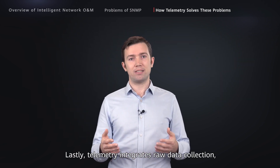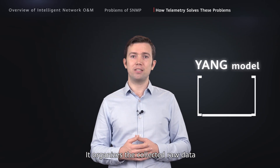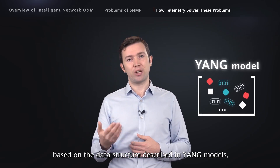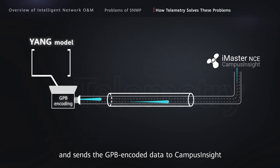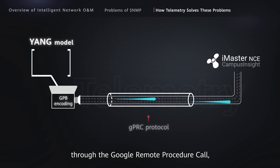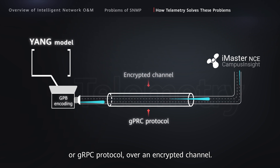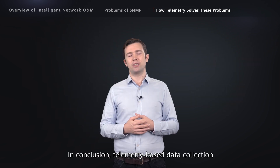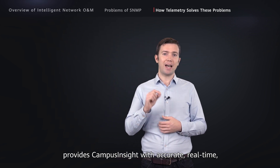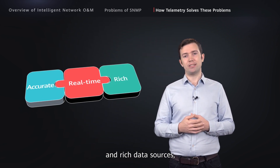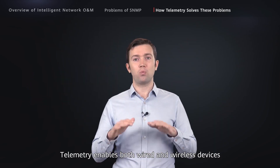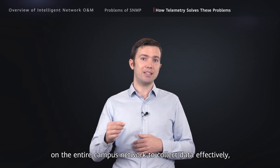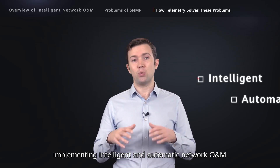Lastly, telemetry integrates raw data collection, data modeling, encoding format, and transport protocol. It organizes the collected raw data based on the data structure described in YANG models, encodes data using GPB, and sends the GPB-encoded data to Campus Insight through the gRPC (Google Remote Procedure Call) protocol over an encrypted channel. In conclusion, telemetry-based data collection provides Campus Insight with accurate, real-time, and rich data sources, building a basis for intelligent O&M and enabling both wired and wireless devices on the entire campus network to collect data effectively.